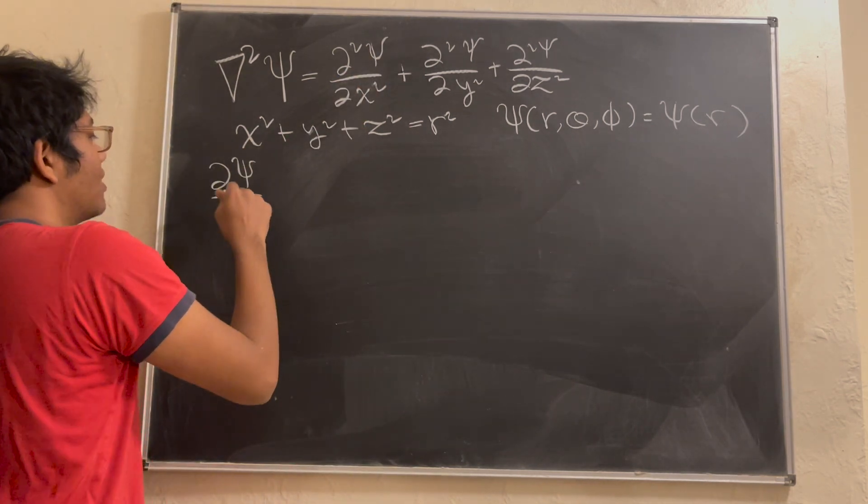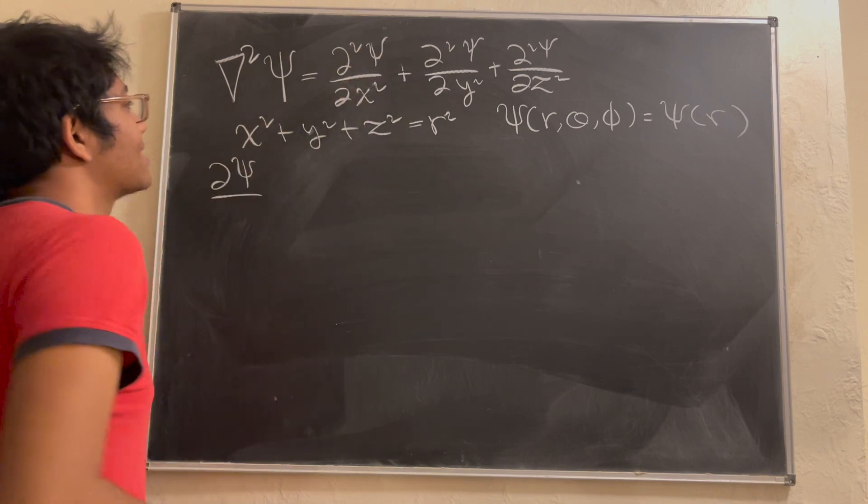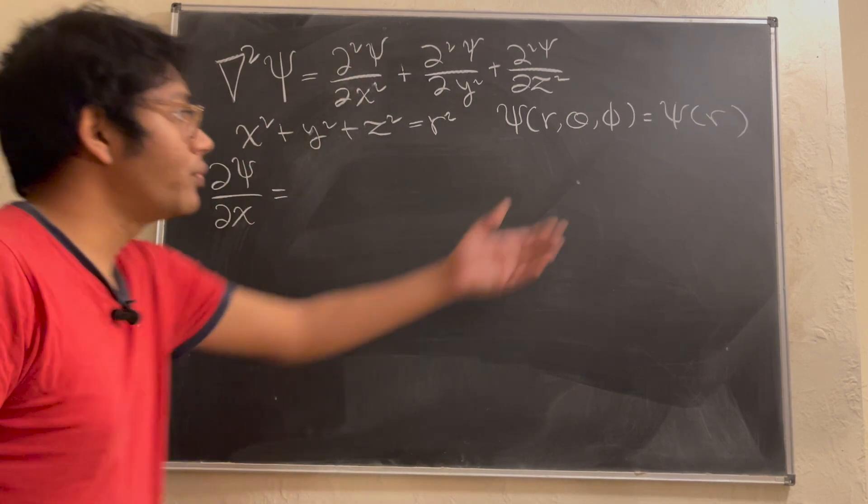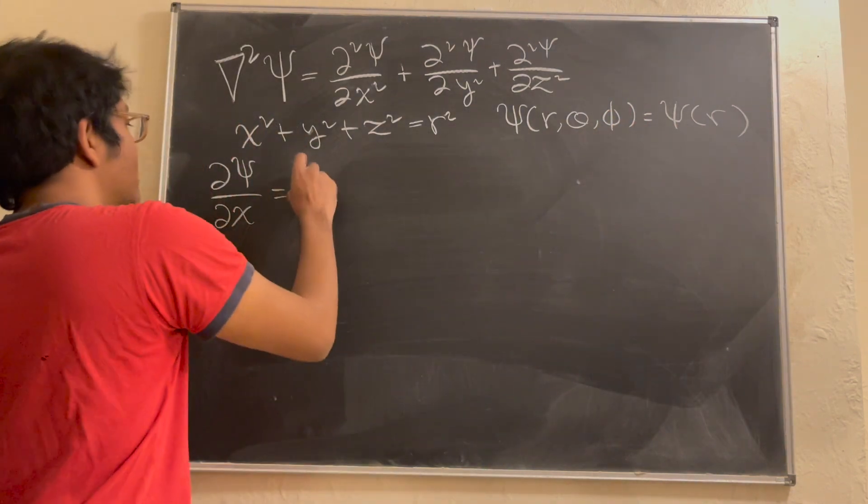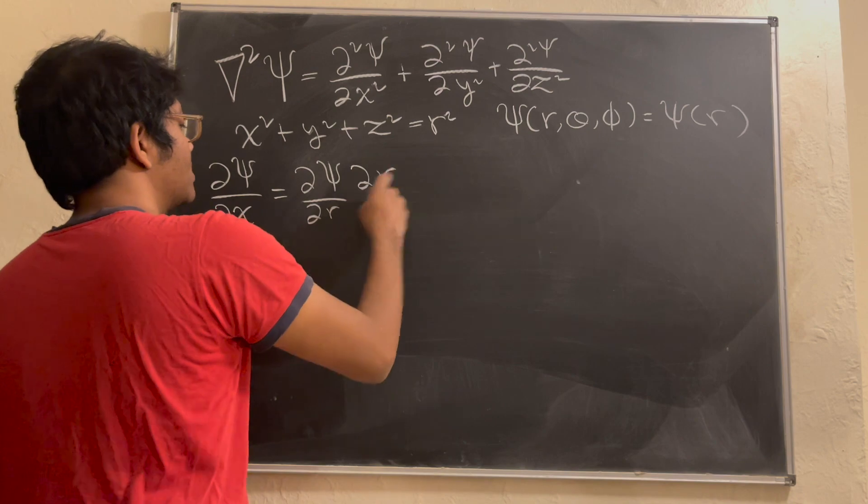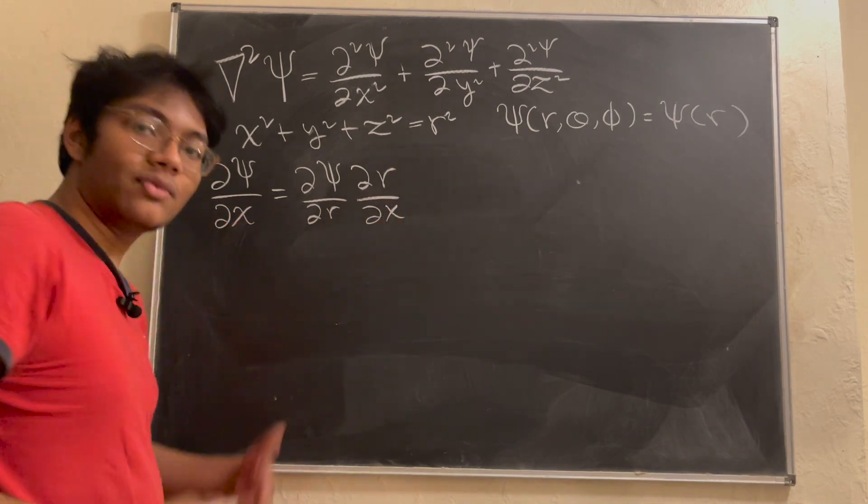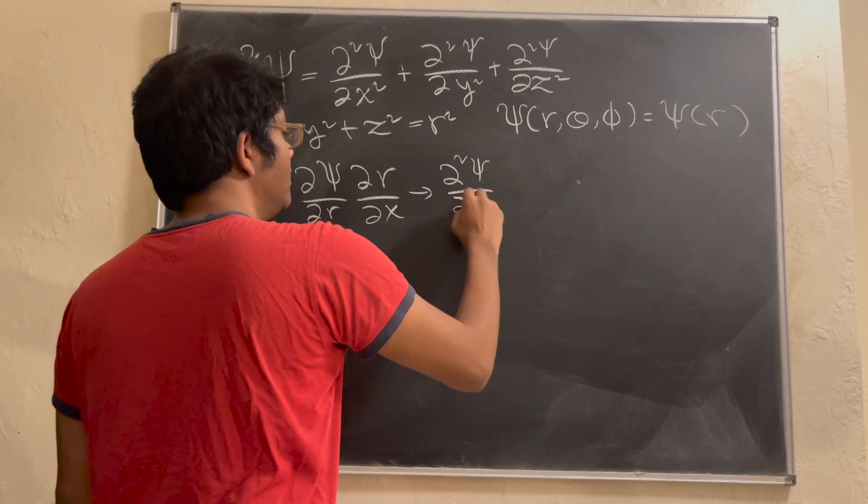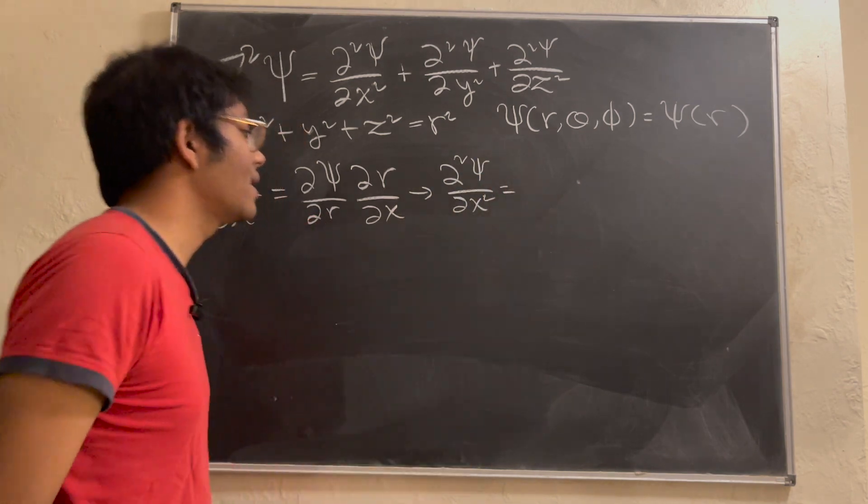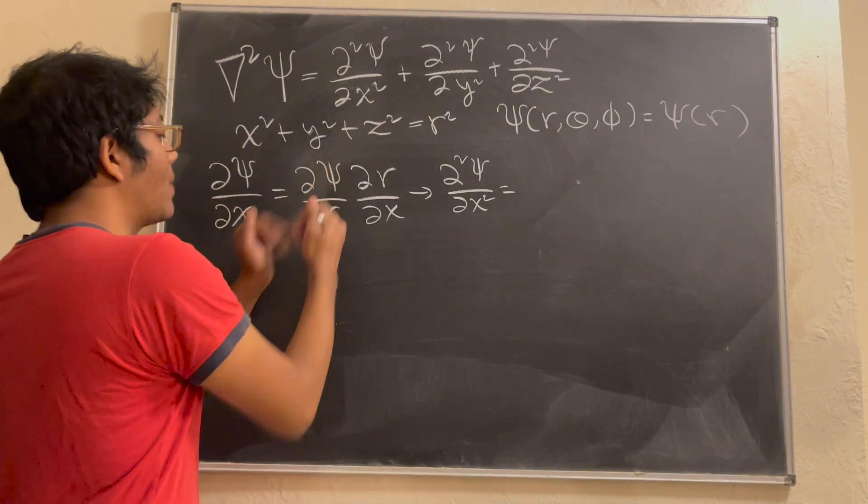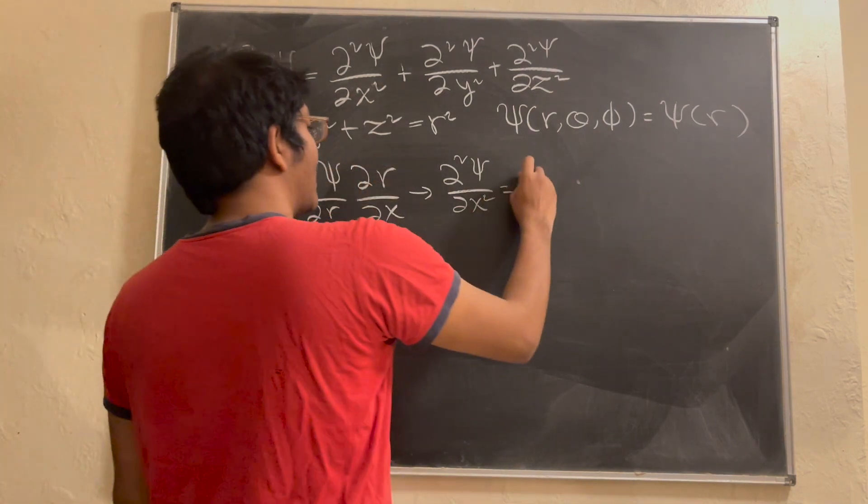So partial psi partial x is going to be what? Well, we know psi depends on R principally, so we're going to have to employ the multivariable chain rule. It's not as bad as it sounds. And then we take the derivative again. So partial squared psi partial x squared is going to be what? Well, now you just use the product rule. Operate on this one, then this one, add them together.